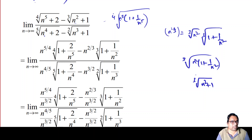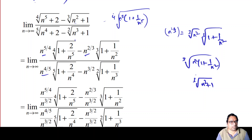Similarly for the denominator: we take n outside to get n^(4/5) times the fifth root of (1 + 2/n^4), and n^(3/2) times the square root of (1 + 1/n^3). So for n^5, n^2, n^4, n^3 we get n^(5/4), n^(2/3), n^(4/5), and n^(3/2) respectively. In all cases, inside the root we get terms in 1/n format.